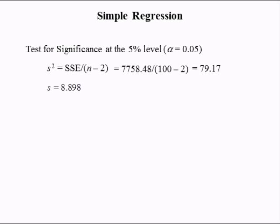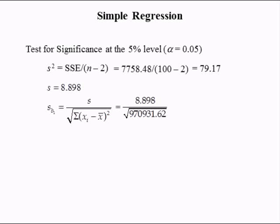Taking the square root gives us the standard error of the estimate: 8.898. The standard error of coefficient B1, S-B1, is equal to the standard error of the estimate divided by the square root of the total variation in X. The standard error of the estimate is 8.898 and the total variation in X was 970,931.62. Hence, the standard error of the slope coefficient B1 is equal to 0.0090.